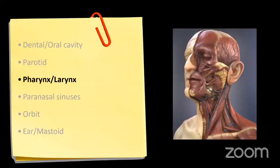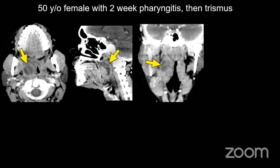Moving to the pharynx and larynx. Here's a 50-year-old female with history of pharyngitis and trismus — inability to open the mouth. There is a collection at the level of the oropharynx, which I call an oropharyngeal/tonsillar lesion. How do I know this is the oropharynx? Because the maxilla and mandible are visible in the same plane. The oropharynx has a tonsil, of course, and there is a collection in the oropharynx.